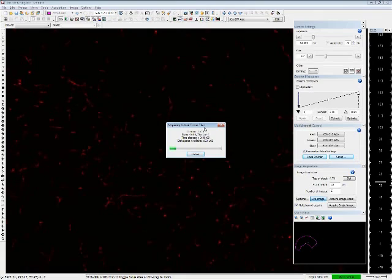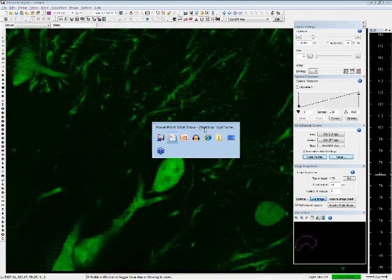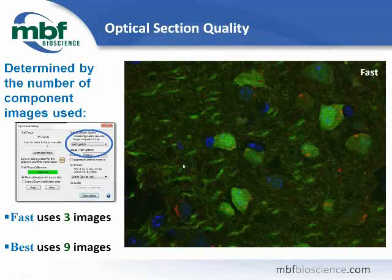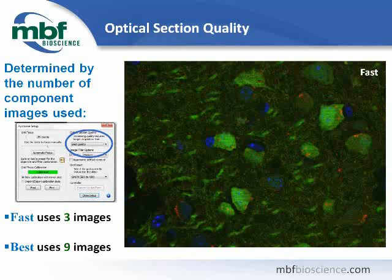While we wait for this to finish capturing, let's continue our discussion. Someone asked about applying this technique to wide-field images captured previously — for this strategy to work, the grid pattern needs to be projected into the focal plane during acquisition time, so you do need to do this live. I'd like to talk about optional settings available in the Apatome dialog. The first is Optical Section Quality, which has four settings from Fast Acquire to Best Quality.